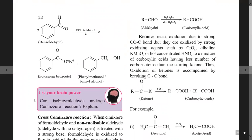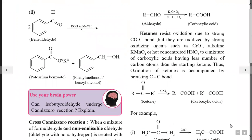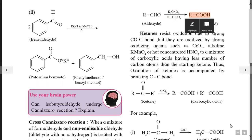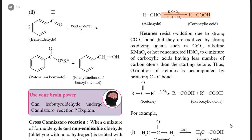The general equation is: RCHO (general formula for aldehyde) when treated with K2Cr2O7 in the presence of dilute H2SO4, which acts as an oxidizing agent, the aldehyde is oxidized into carboxylic acid with formula RCOOH. This is the oxidation of aldehyde.